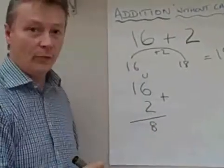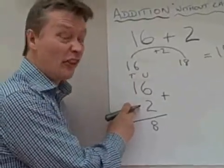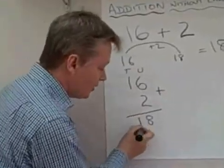and then we add the tens, which is this column. So 1, and you've got to imagine there's nothing there. So 1 add nothing is 1.